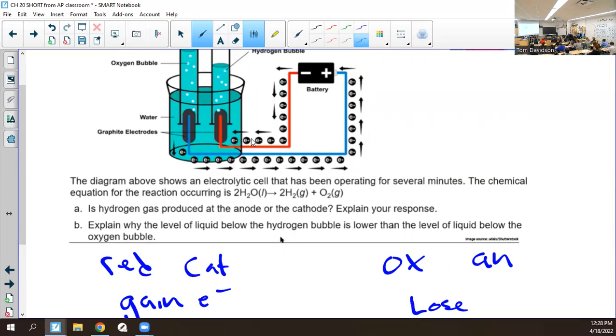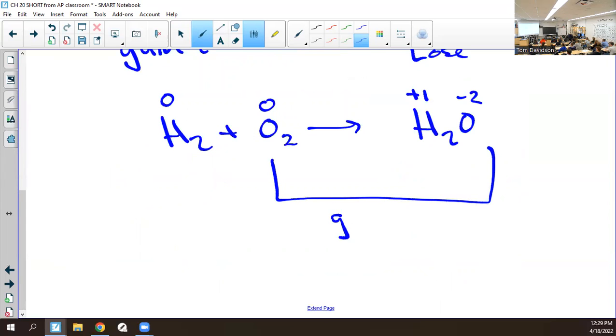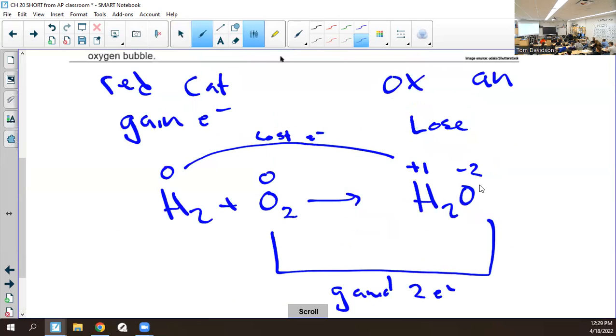So it's asking about hydrogen. Is it produced at the anode or the cathode? Why? Is it reduced? It's not reduced. H2 plus O2 goes to H2O. Zero, zero, plus one, plus one, minus two. Which one gained electrons? Gained two electrons. So this did what? It lost.